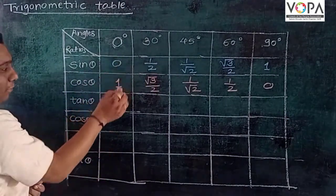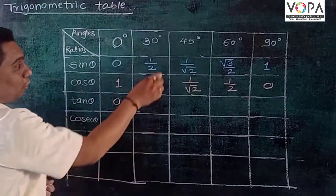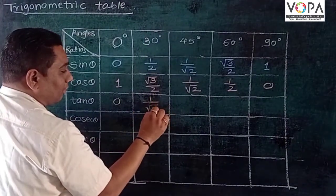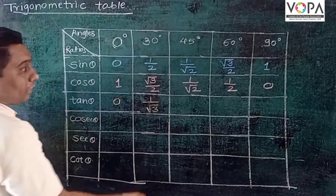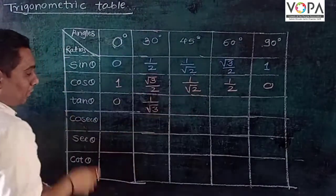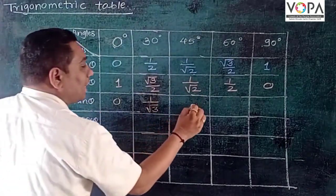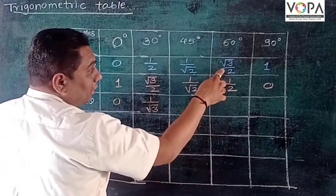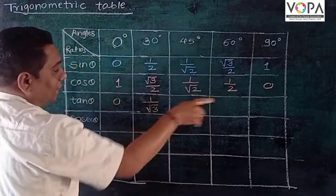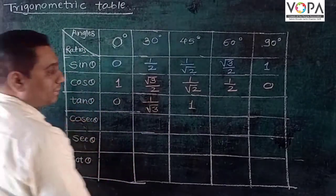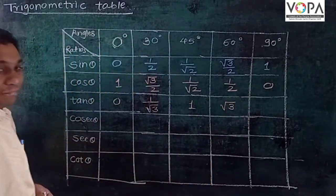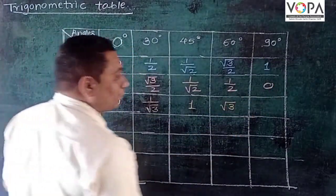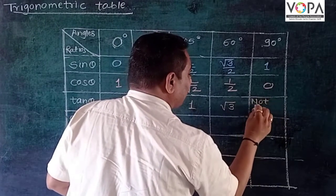Using sin/cos values: tan 0° = 0/1 = 0, tan 30° = (1/2)/(√3/2) = 1/√3, tan 45° = 1, tan 60° = √3. For tan 90°, cos θ = 0, so 1/0 cannot be calculated — hence it is not defined.